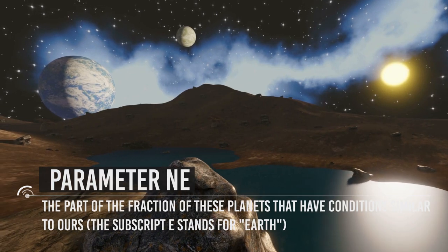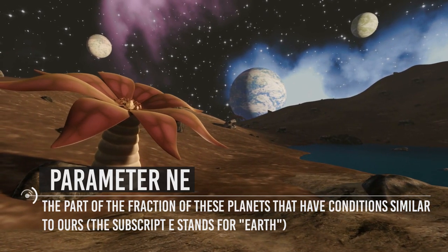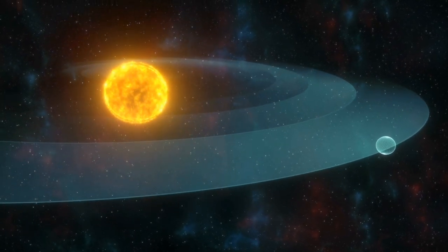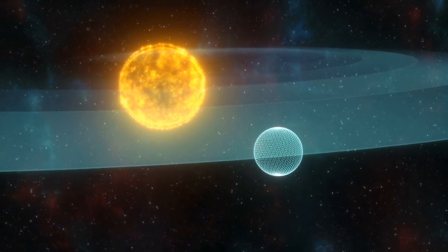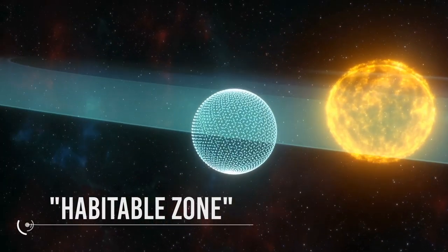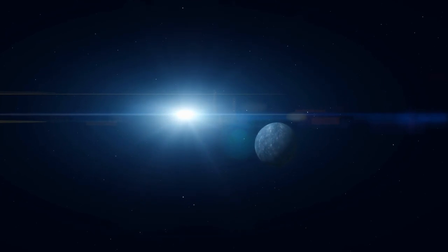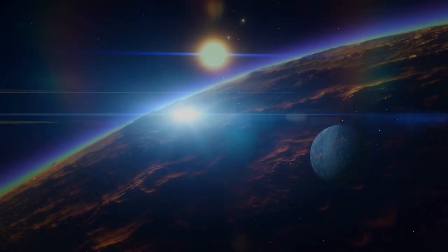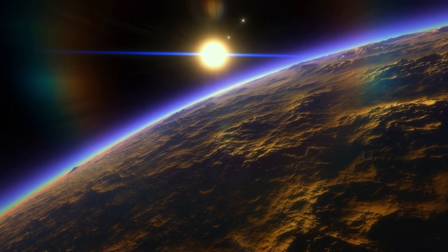N E represents the part of the fraction of these planets that have conditions similar to ours. The subscript E stands for Earth, therefore potentially suitable for the development of life, a distance from their star that can provide a quantity of heat and light neither scarce nor too intense, i.e. that places it in what is usually referred to as habitable zone, in an area of the planetary system where the tidal effects of the other planets are negligible, a planet in which there is the presence of the essential elements for the birth of life and with such gravity as to be able to retain an atmosphere, an atmosphere that is able to induce a greenhouse effect so as to protect the soil from harmful ultraviolet radiation.